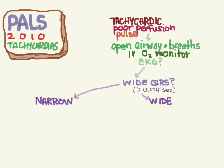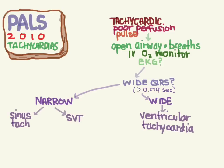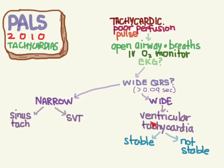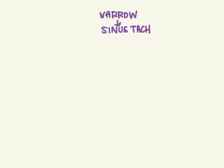In kids, a wide QRS means anything greater than 90 milliseconds. The QRS is either going to be narrow or wide. If it's narrow, you'll probably have either sinus tach or SVT. If it's wide, it's probably ventricular tachycardia, which could be stable or not stable. So the basic breakdown comes down to checking the QRS — narrow or wide — and then determining which of these three rhythms you have.